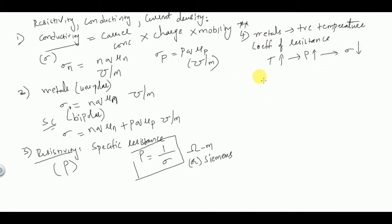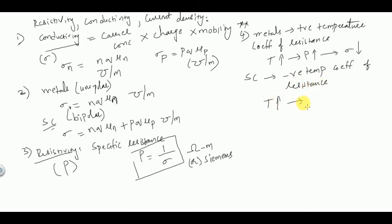Similarly, semiconductors possess a negative temperature coefficient of resistance — that is, as temperature increases, resistivity decreases, so conductivity increases. So in the case of semiconductors, as temperature increases, conductivity also increases. In the case of metals, as temperature increases, conductivity decreases.